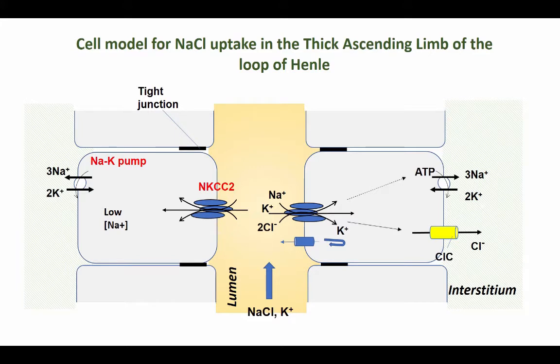Here we're looking at the tubule of the thick ascending limb, and you can see in the yellow center that represents the tubular fluid. On the side of the tubule, on the left and the right side, you can see the shaded portions referred to as the interstitium.